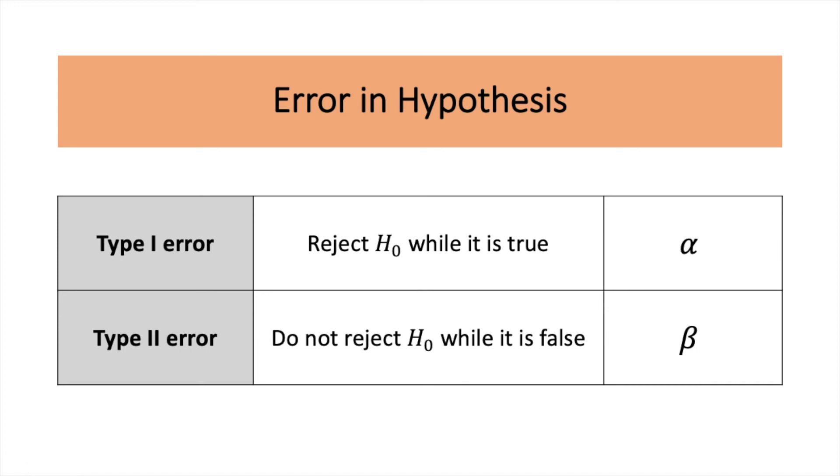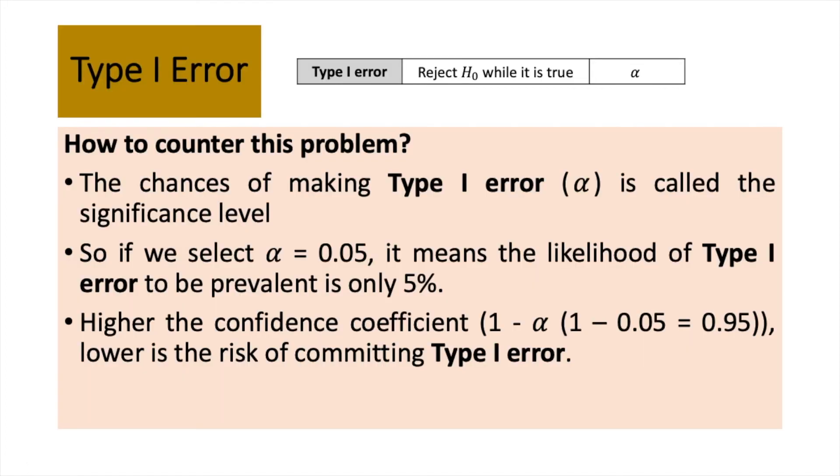I am going to share with you some solutions to reduce these errors. Let's look into Type 1 error, where you reject the null while it is true. How do we counter this problem? The chances of making Type 1 error, alpha, is called the significance level. So, if we select alpha equal to 0.05, it means the likelihood of Type 1 error to be prevalent is only 5%.